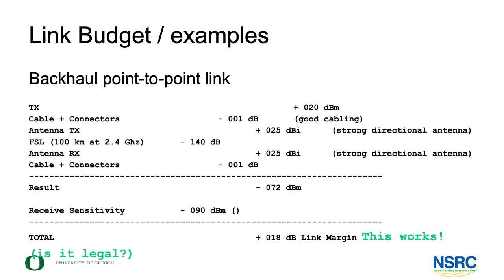Here's another example for a point-to-point link over 100 kilometers — that's a loss of minus 140 dB to make up for. We do so by using strong antennas on both sides at plus 25 dBi — strong directional antennas — and again get a working connection. Note: you should check whether you're allowed to combine 20 dBm output with a strong antenna, because in most countries the output power limit applies to the sum of radio output and antenna gain together, and that total is typically capped at 20 dBm including the antenna.